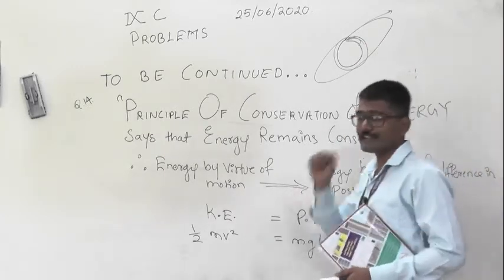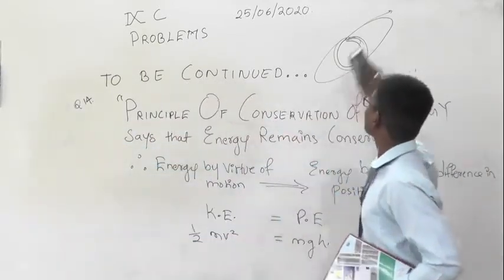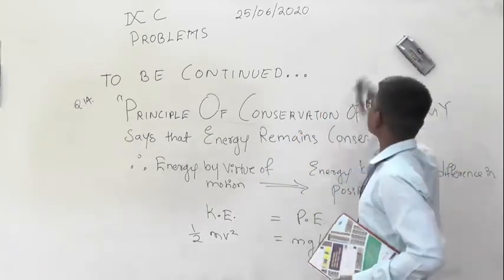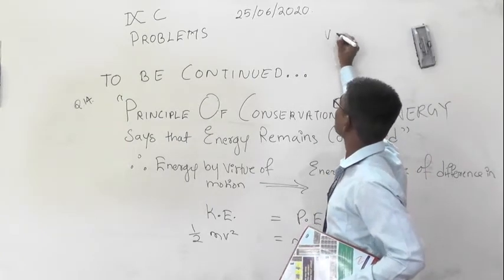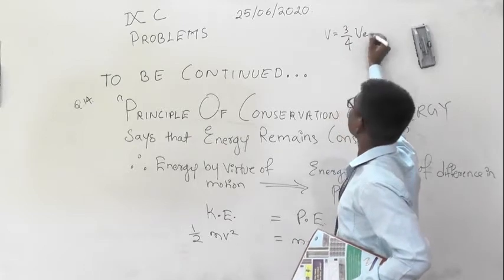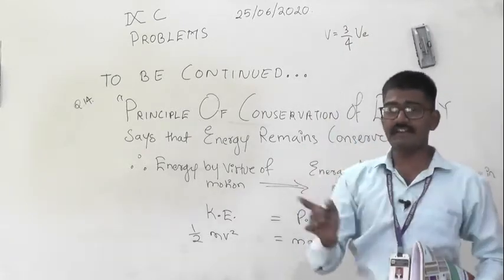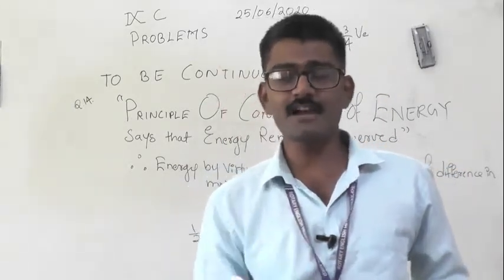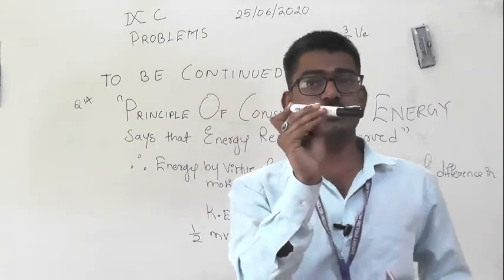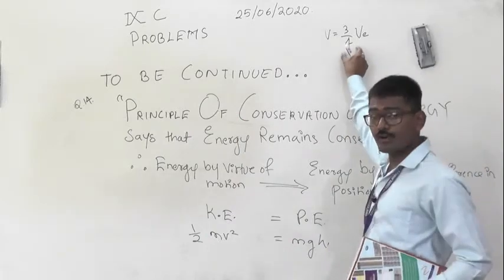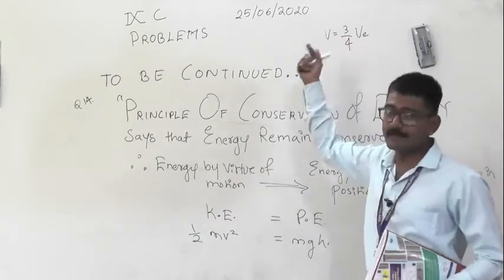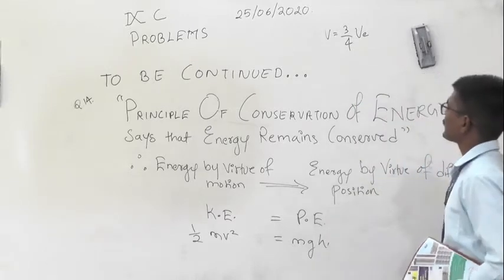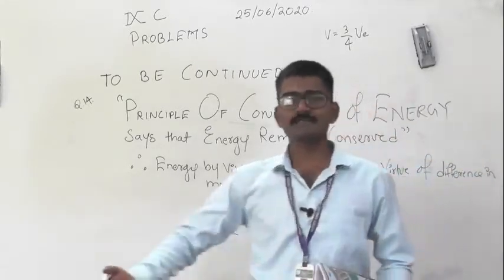In this question, the velocity given is three-fourths of escape velocity. The escape velocity on the surface of Earth is always 11.2 kilometers per second. If you throw a body with 11.2 km/s it escapes. But here you are throwing with three-fourths of that speed, which is less than escape velocity, so it will reach a certain height. We need to find that height.